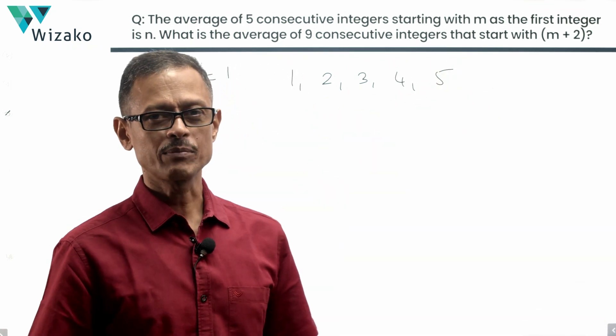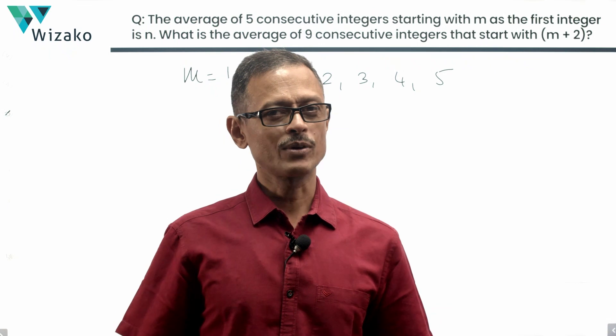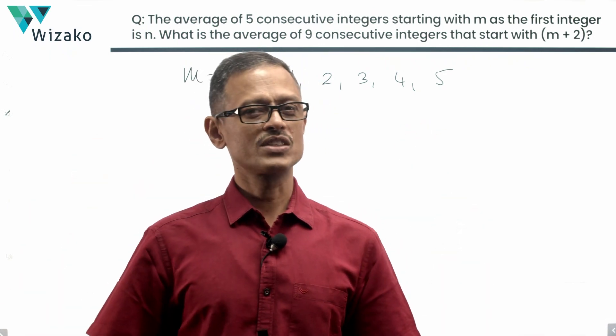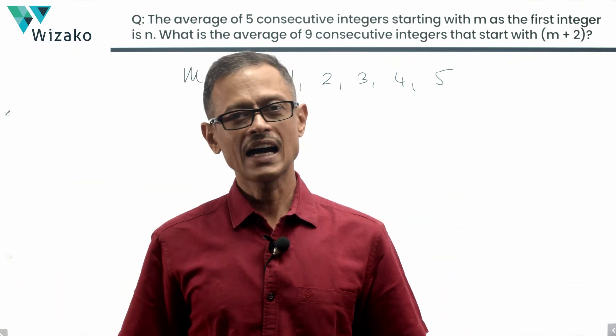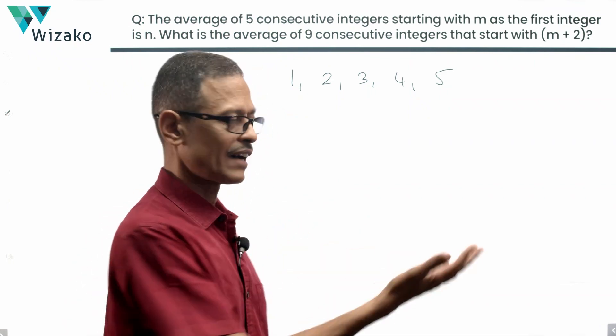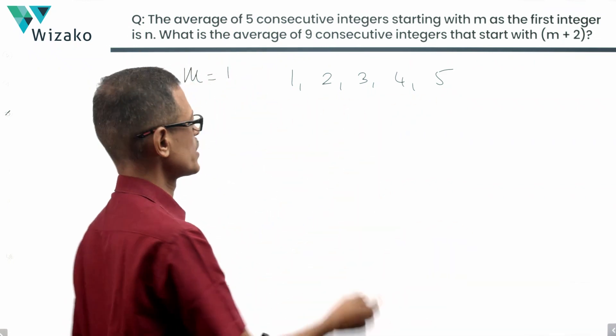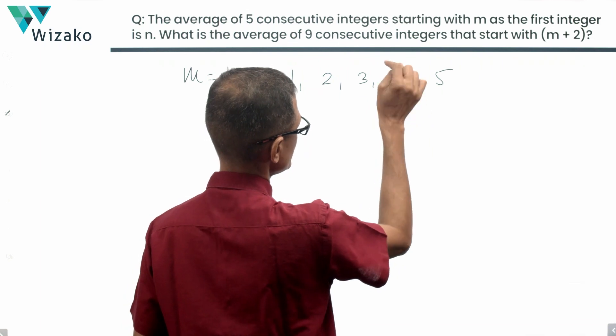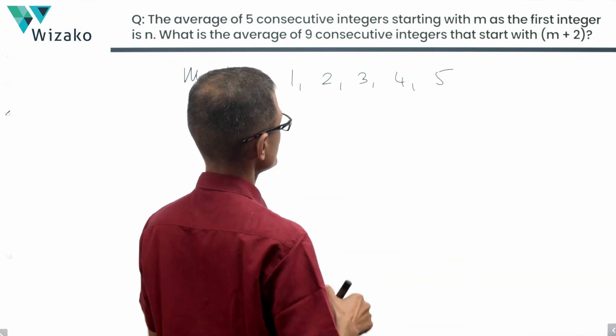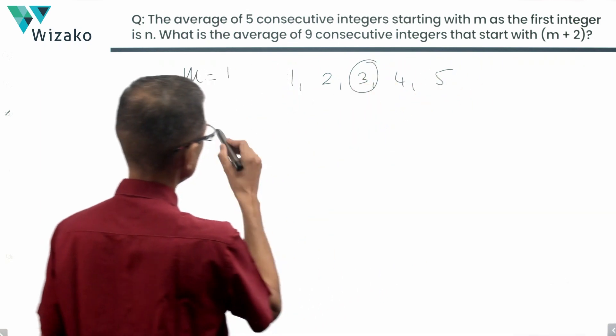Obviously, these five numbers are in an arithmetic progression. If numbers are in an arithmetic progression and we have an odd number of terms in that sequence, then the middle term is the average of it. You can also compute the average by adding these numbers. Whichever way we go about it, 1 plus 2 is 3, 3 plus 3 is 6, 6 plus 4 is 10, 10 plus 5 is 15. 15 by 5 is equal to 3. So the average is equal to 3.